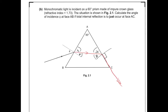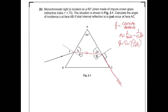If theta is the angle that gives total internal reflection, then theta equals the critical angle. Using the critical angle version of Snell's law: n equals 1 over sine c, which here is 1 over sine theta. So theta equals inverse sine of 1 over n: sine to the minus 1 of 1 over 1.73, giving theta equals 35.3 degrees. Then x equals 90 minus theta, which is 90 minus 35.3, so x equals 54.7 degrees.